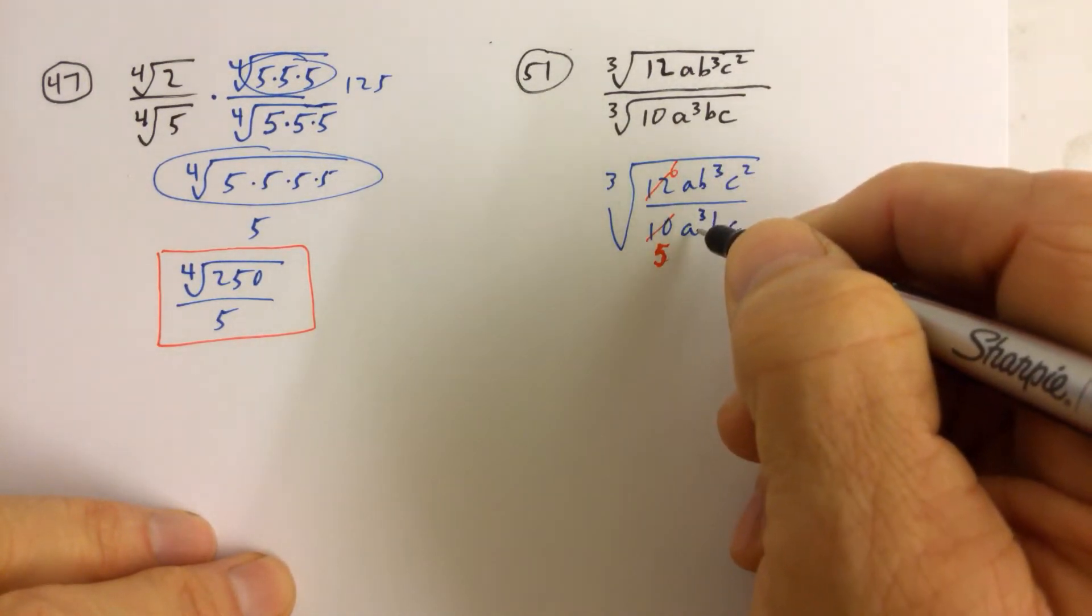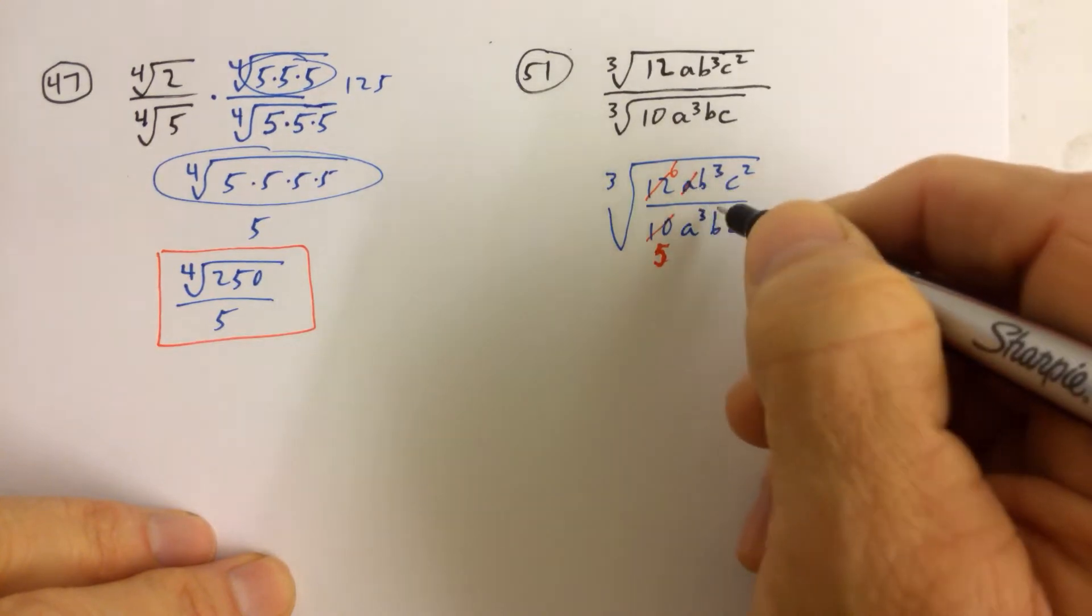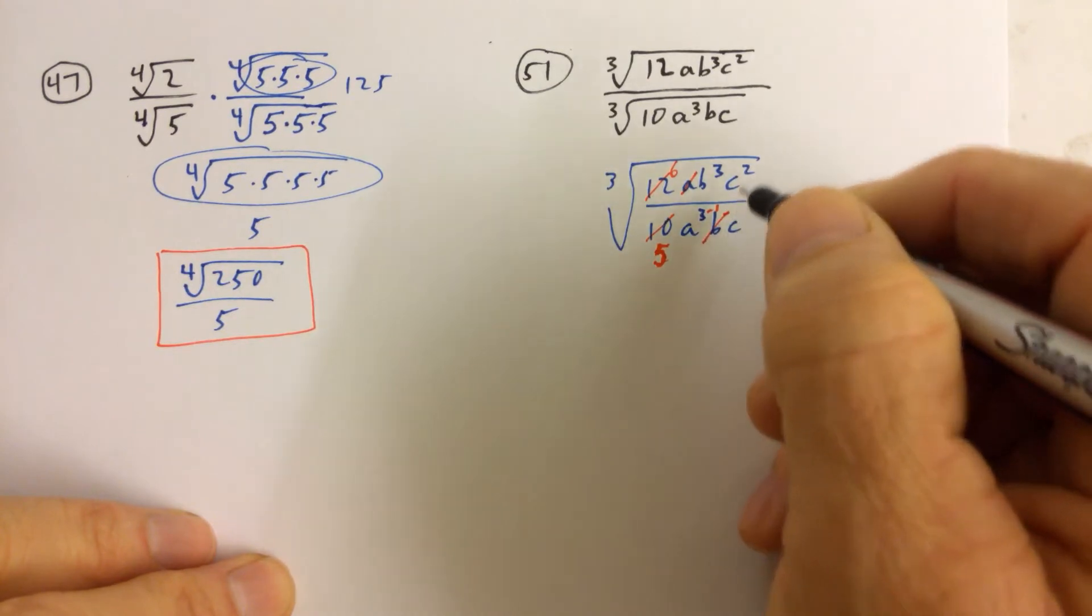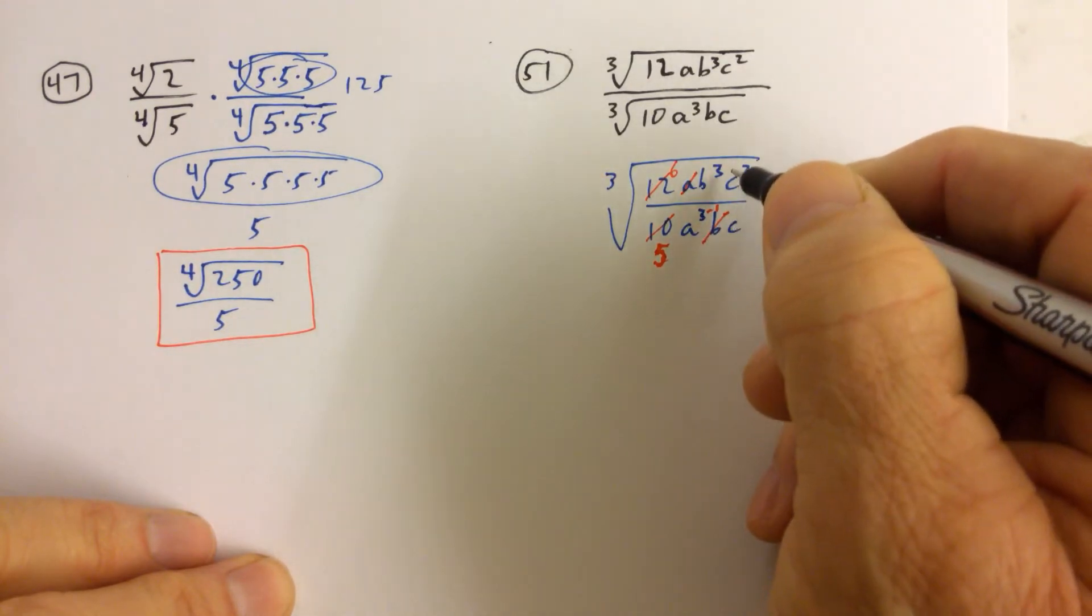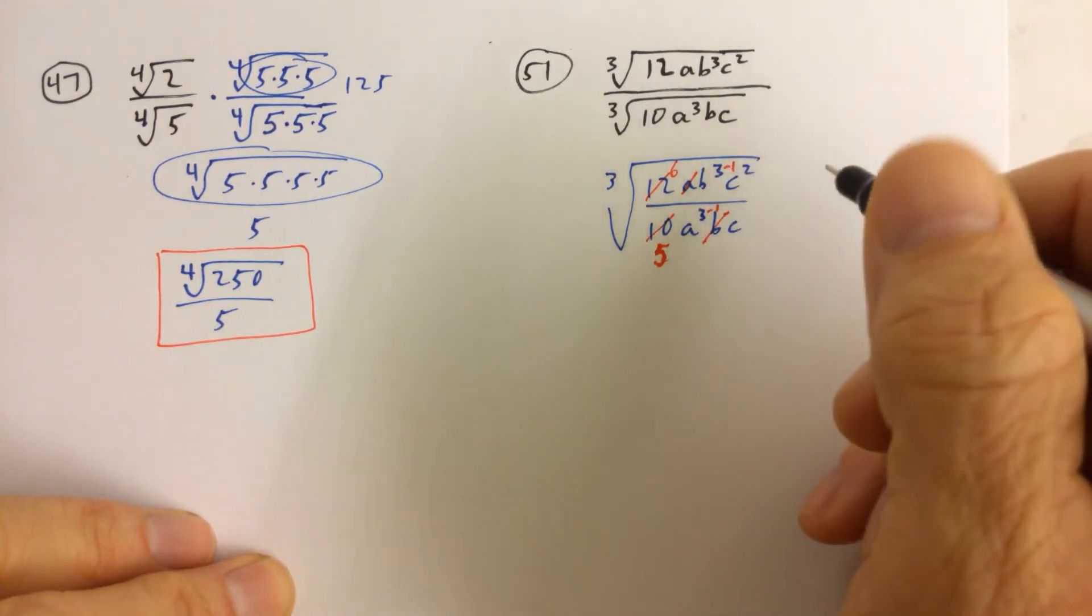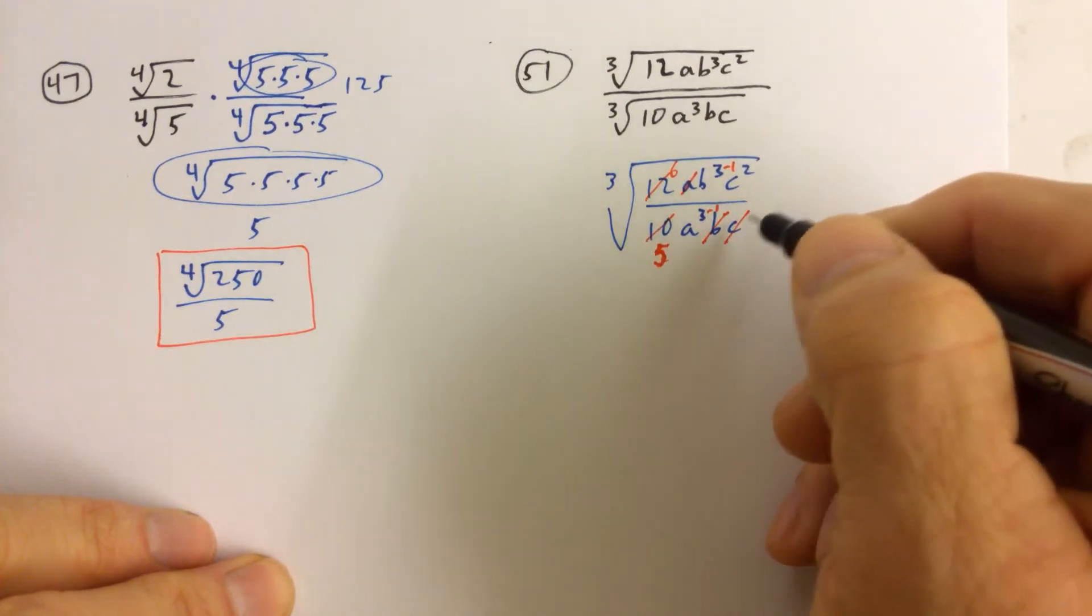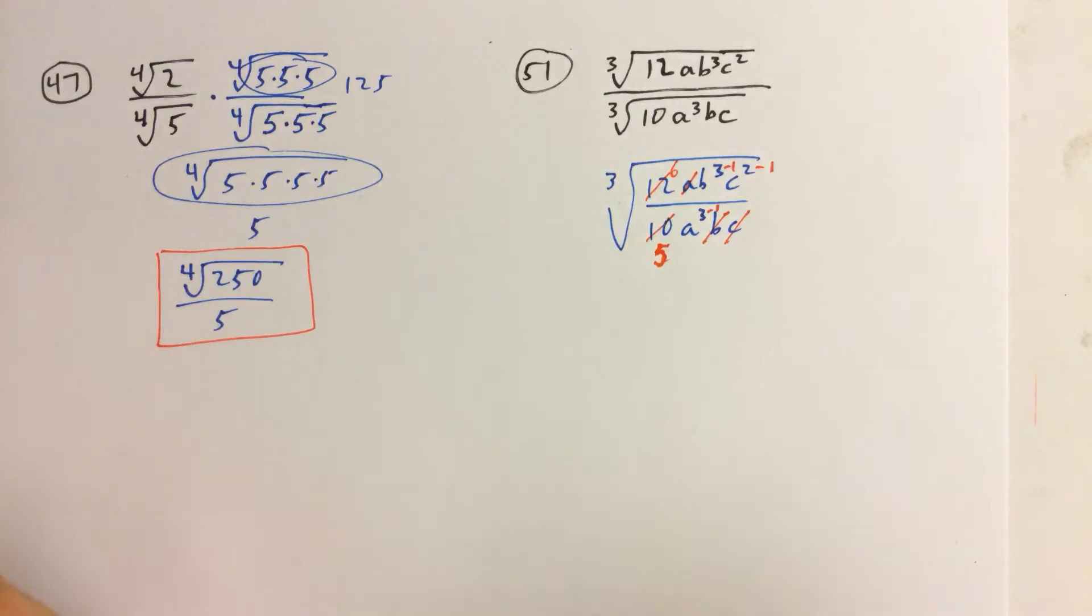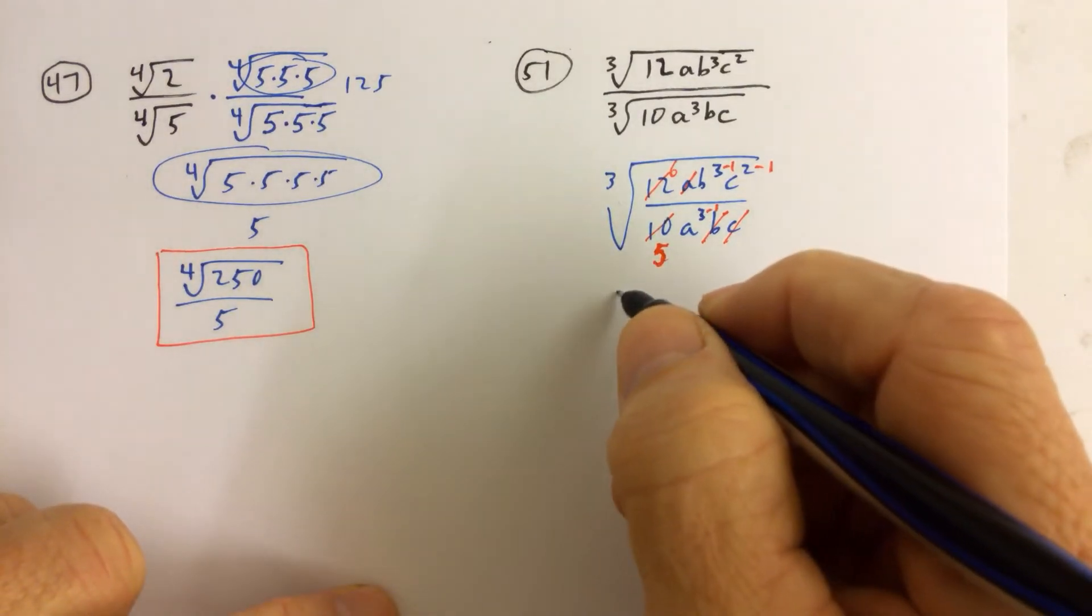if there's more a's on the bottom, then we cancel 1a, and we subtract 1 from that exponent. We have more b's on top, so we're going to take 1b away from the denominator, and 1b away from the numerator. We're going to take 1c away from the denominator, and we're going to take 1c away from the numerator. So when the dust settles,